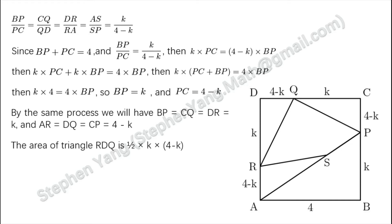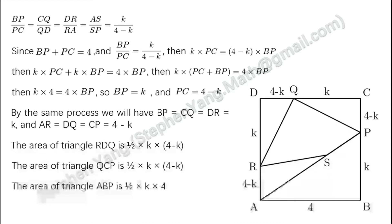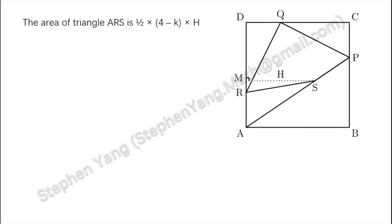The area of triangle RDQ equals one half times K times (4 minus K), and the area of triangle QCP has the same area. The area of triangle ABP equals one half times 4 times K. Now we will be figuring out the area of triangle ARS.